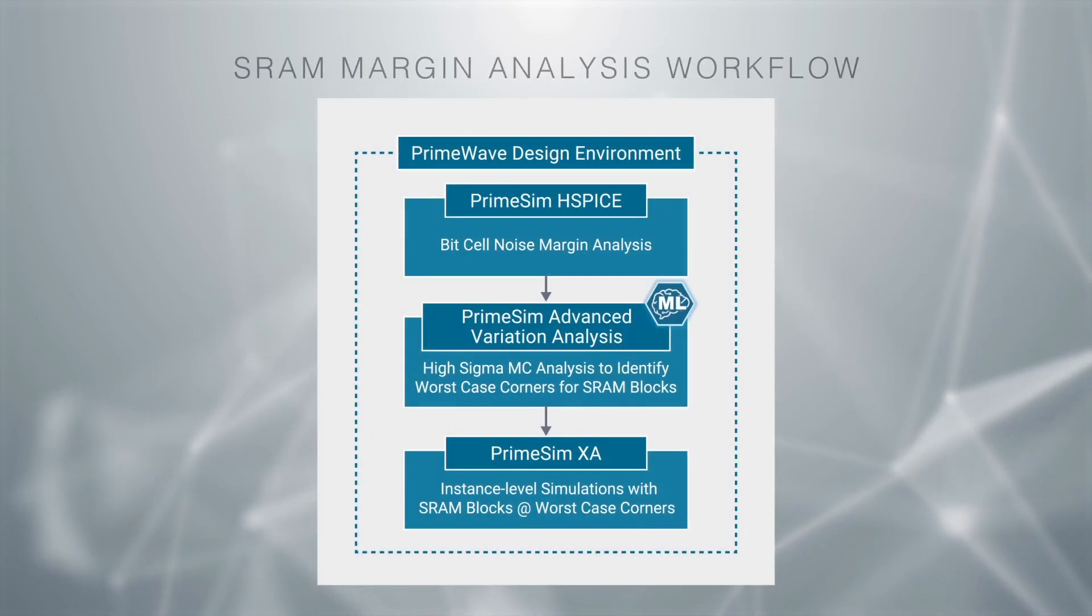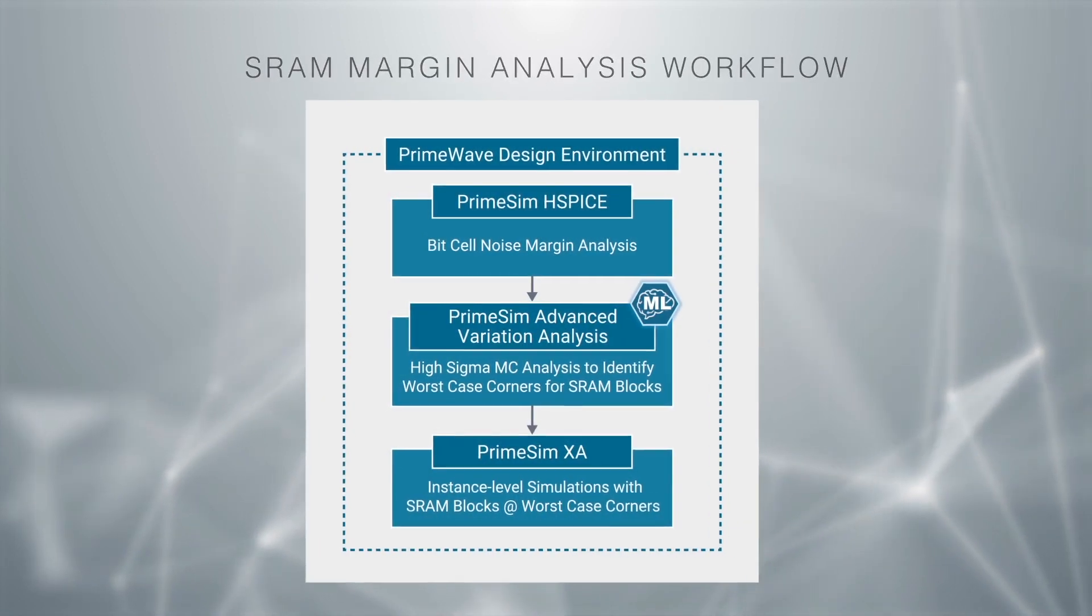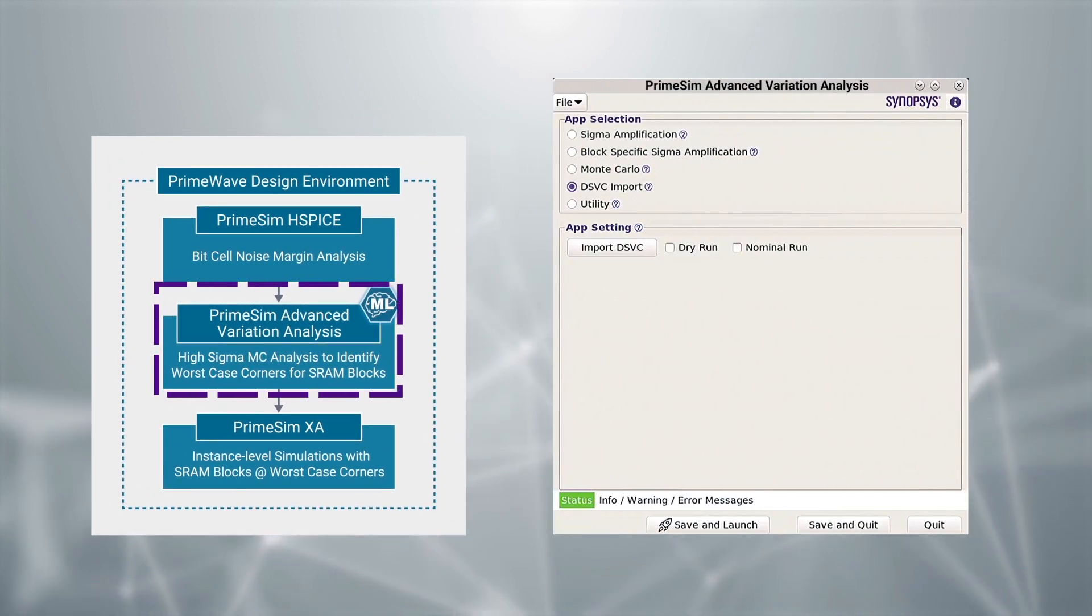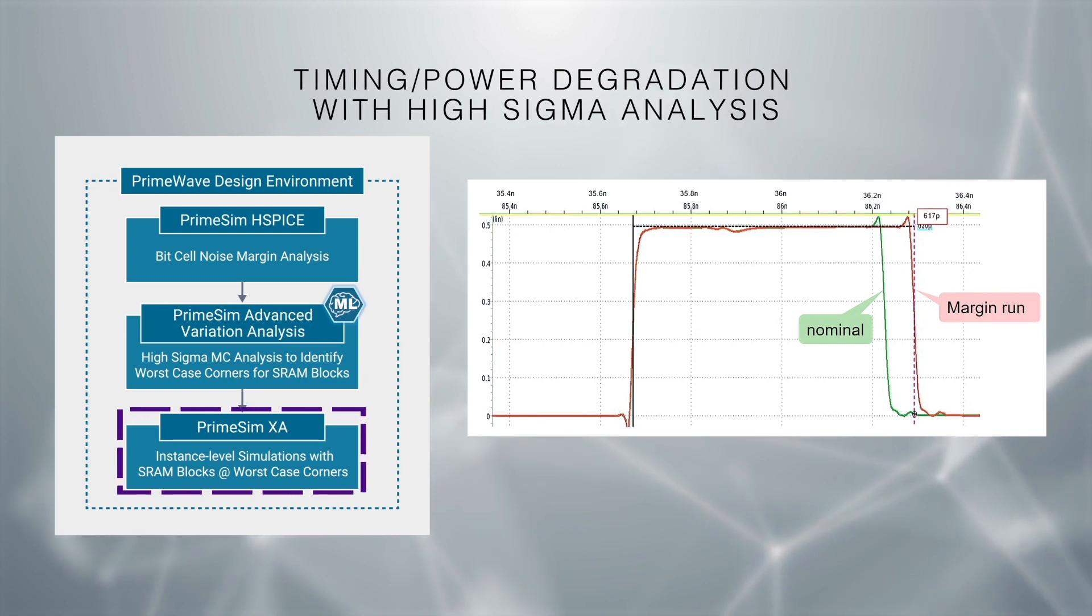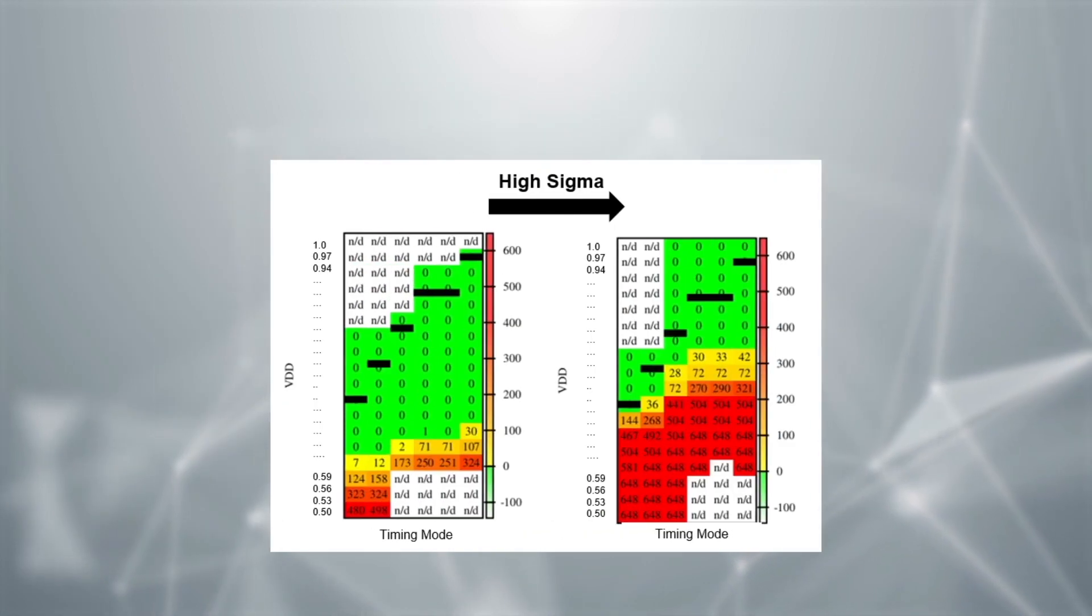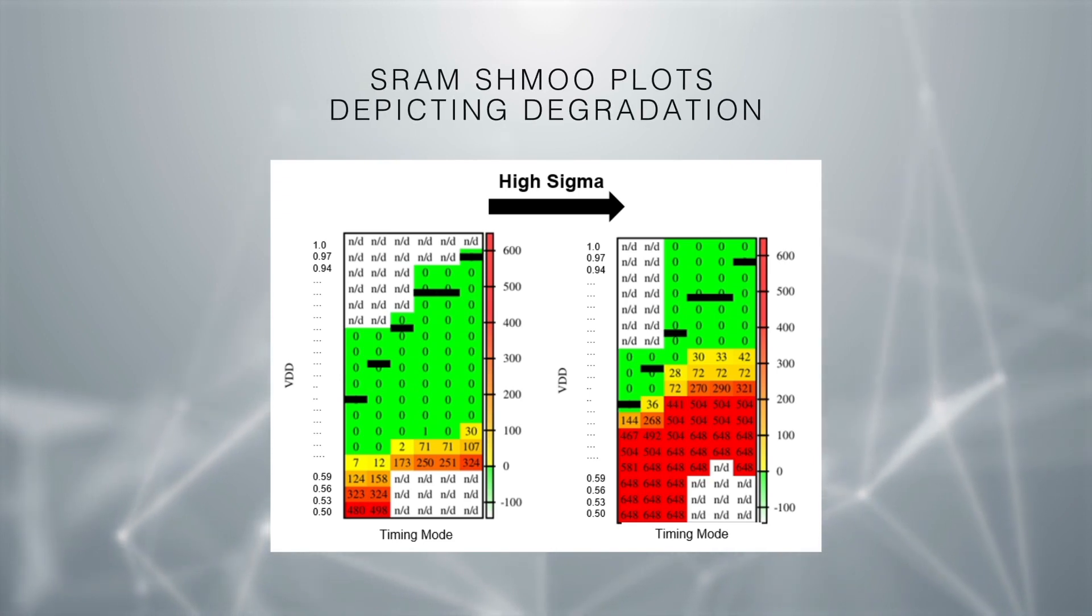The worst-case sigma corner for each building block is selected and imported seamlessly into a full instance netlist. This full instance netlist is then simulated using PrimeSim XA, thus enabling a high sigma characterization. Repeating these steps across multiple PVT corners enables SRAM designers to create the SMU plots as shown.